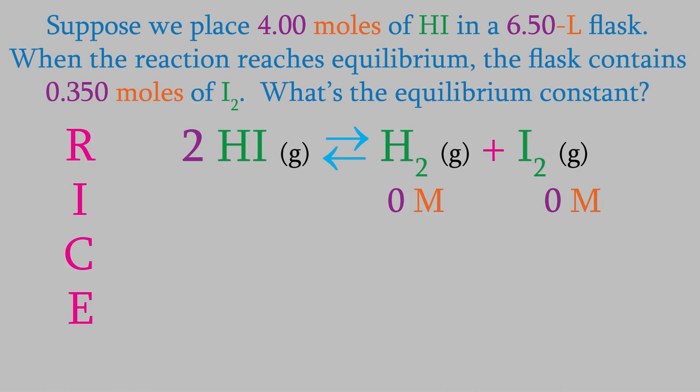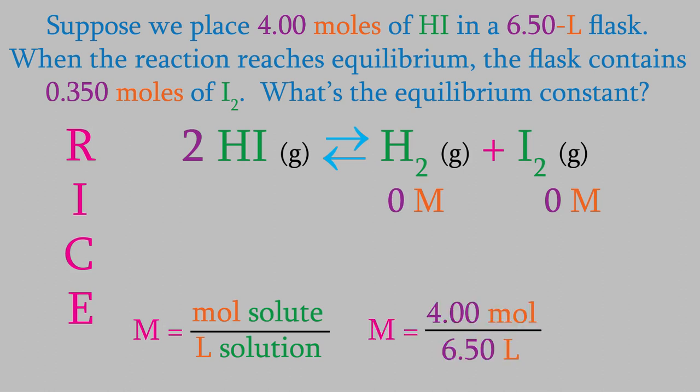For the HI, we need to be a little careful. We want the concentration, not the number of moles. So, we'll do a quick calculation to get the molarity. You might remember that the molarity is the moles per liter. Since HI is a gas, it will fill up the whole flask, so the volume is 6.50 liters. That gives us an initial concentration of 0.615 molar.